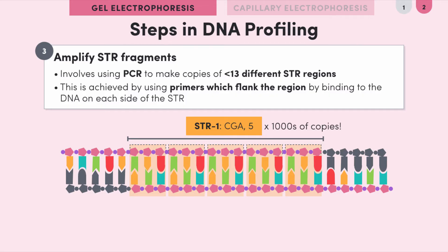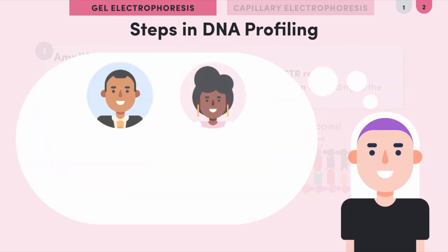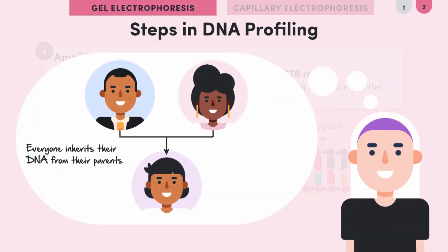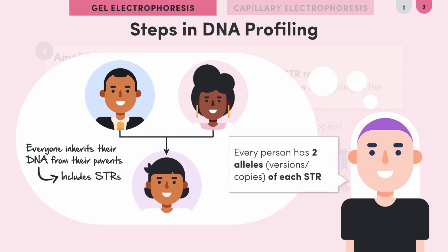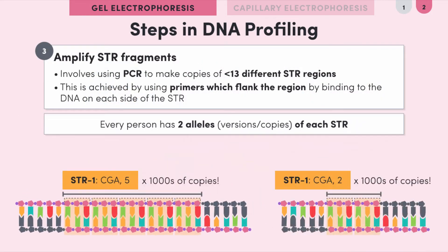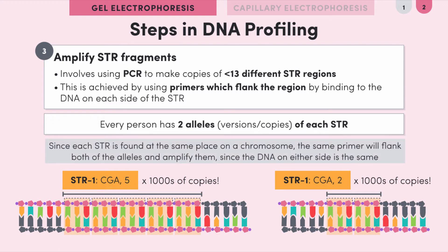Remember, everyone inherits their DNA from their parents — the result is that every person has two alleles, or versions, of each STR, since they inherit one from each parent. Let's say the person we took our sample from has two different alleles for this STR: one with five repeats and one with two. Since these STRs are found at the same place on a chromosome, the same primers flank both alleles and amplify them, since the DNA on either side will be the same.